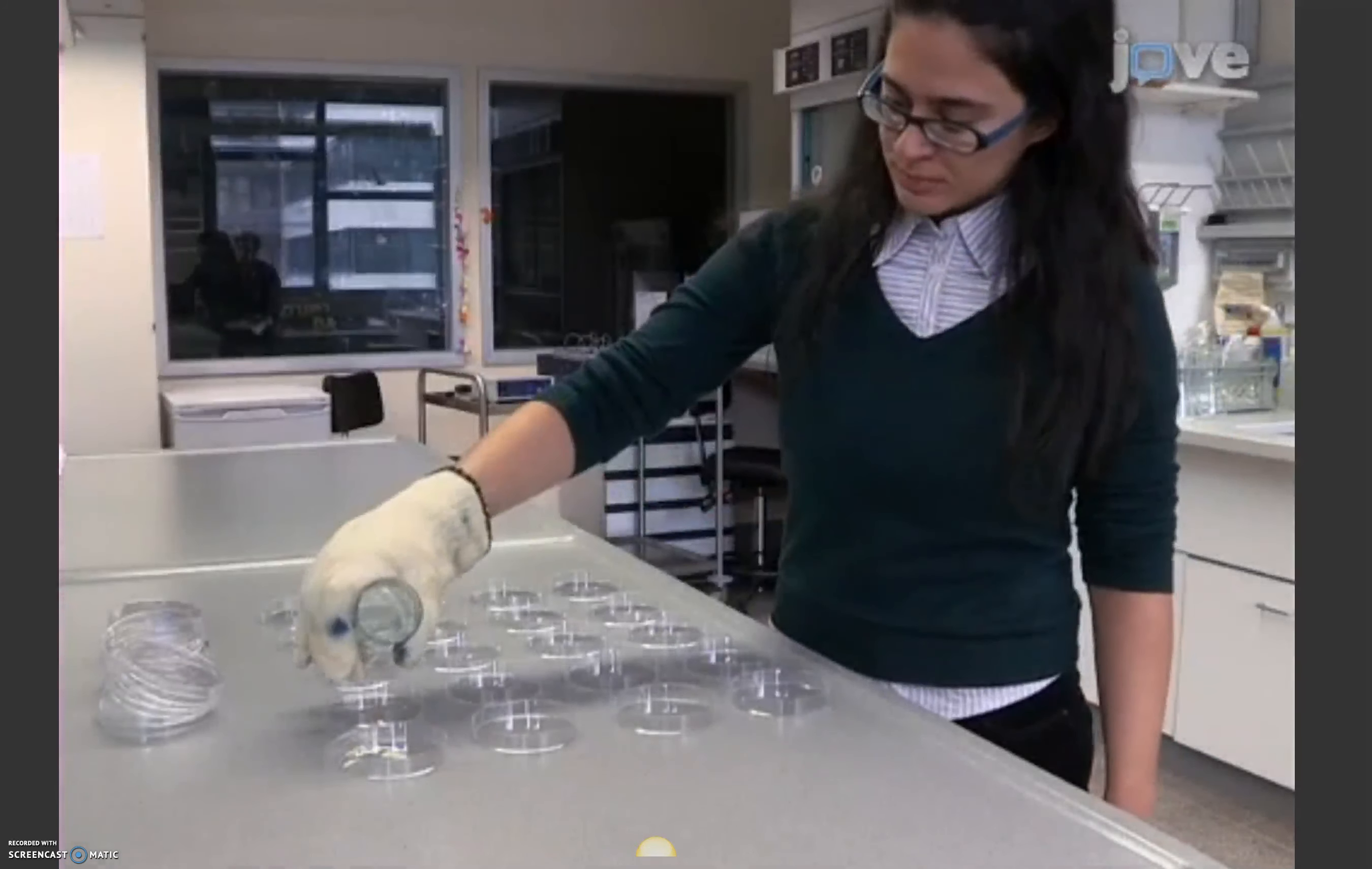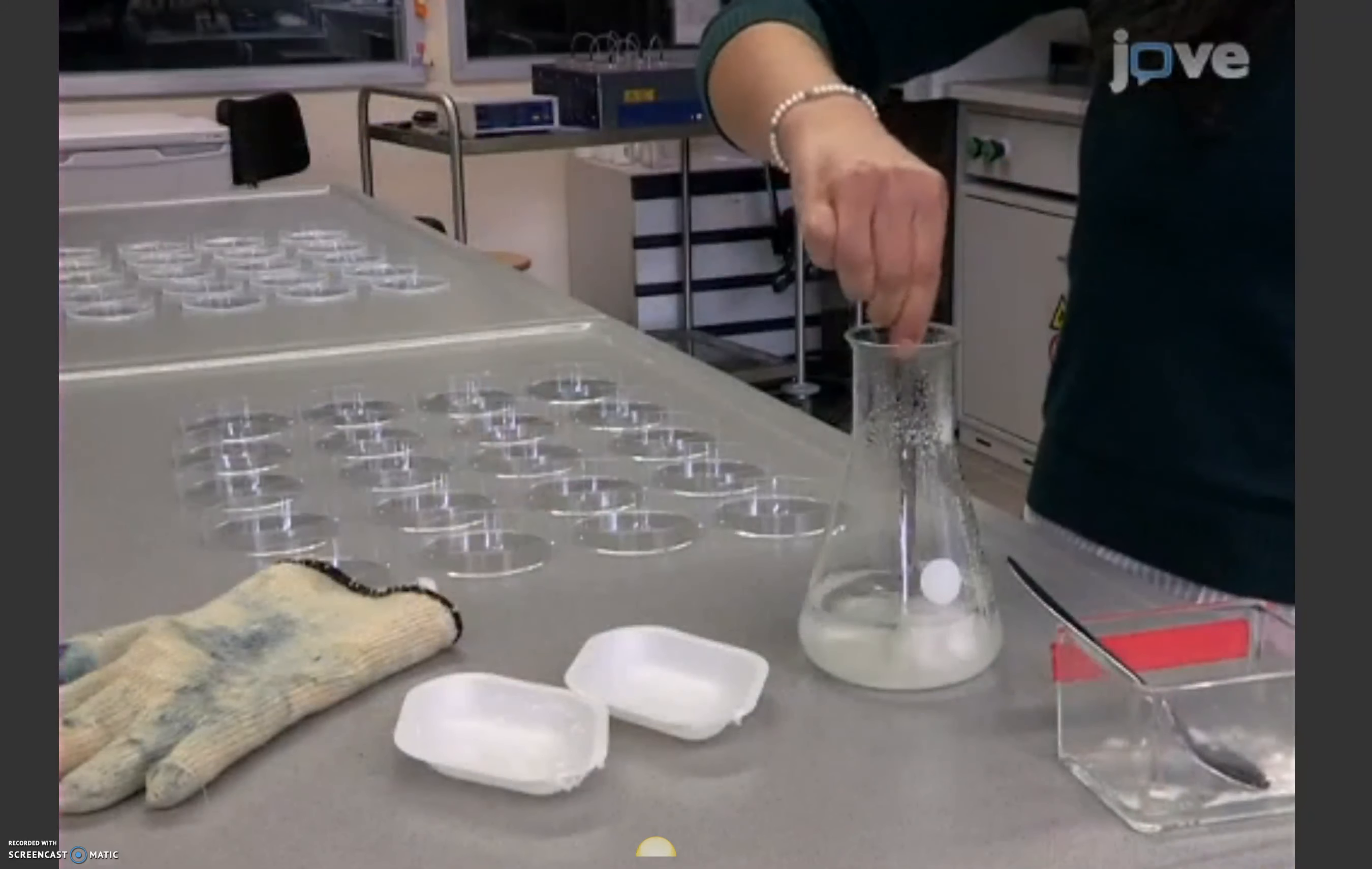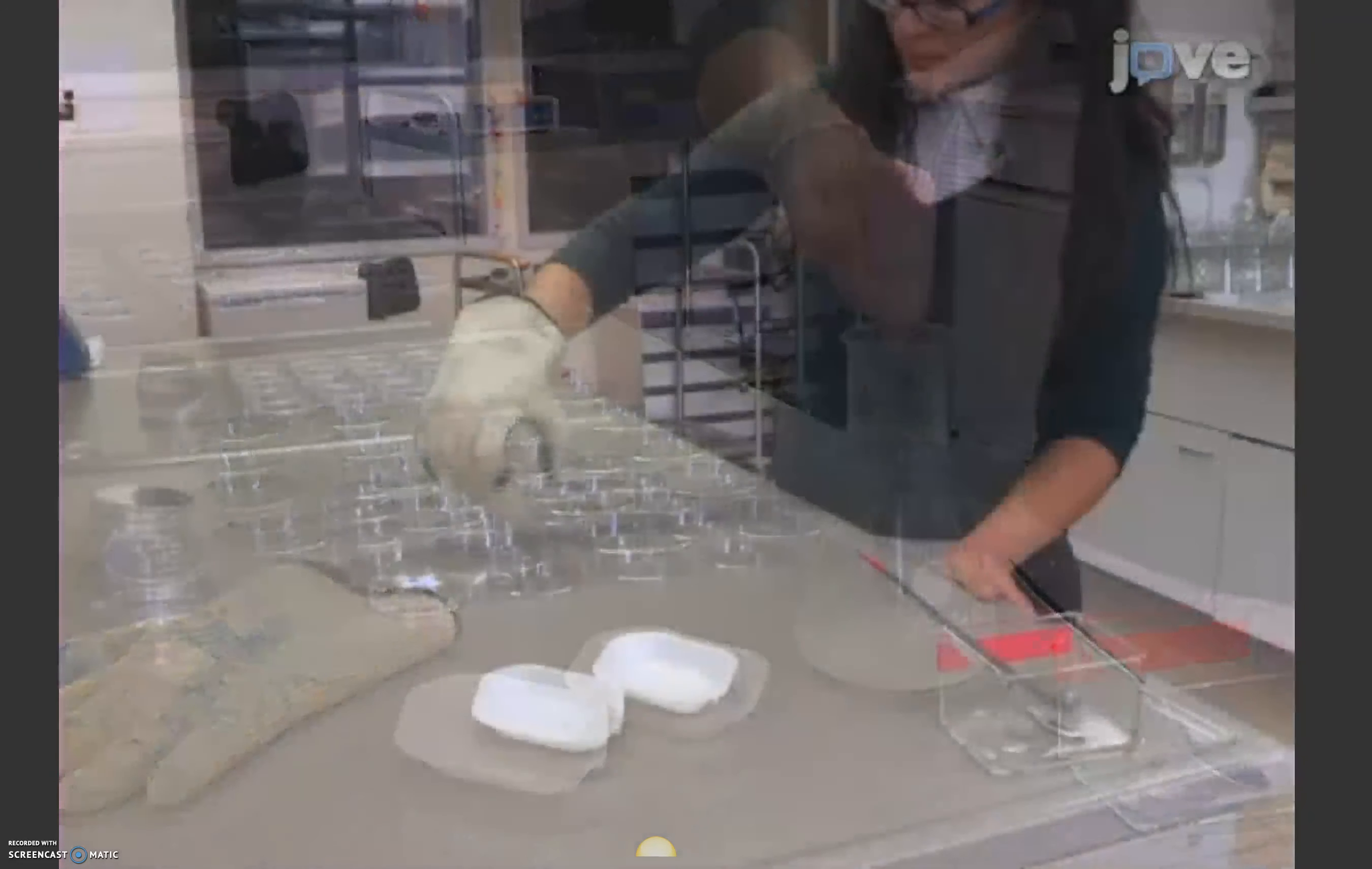First, make 2.5% agarose petri dishes without fructose. To prepare the fructose dishes, add the fructose to the dissolved agarose, and then pour it into the plate.